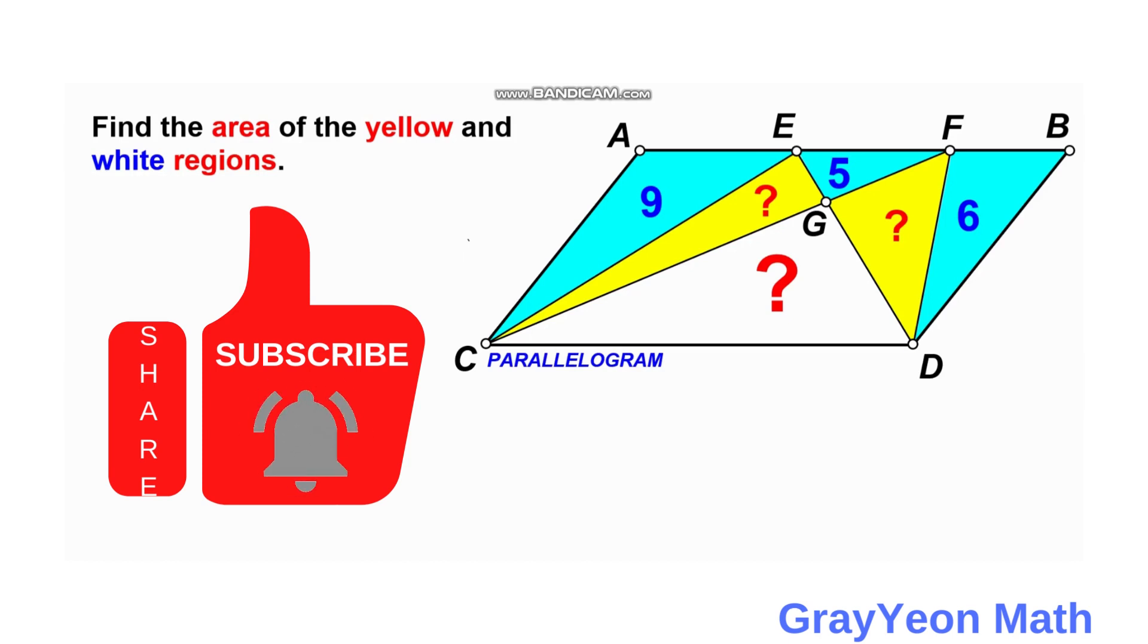Welcome to GrayonMath. We are asked to solve this problem. We have a parallelogram ABCD divided into regions: a yellow region, two yellow regions, and blue regions numbered 9, 5, and 6. We will find the area of the sum of the yellow regions and the white region.